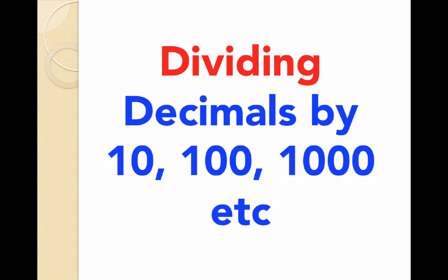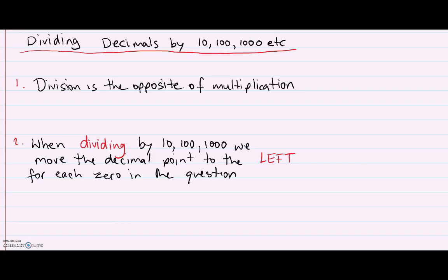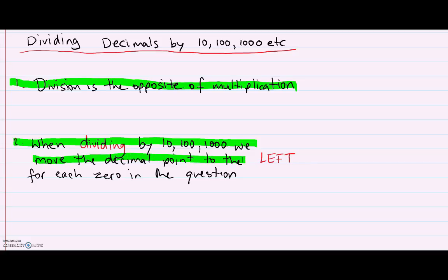Let's take a look at dividing. Just like the last video, I have two important things to note. The first is that division is the opposite of multiplication, so whatever rule we had for multiplication, we're going to have the opposite rule for division. The second thing to note is that when we divide by tens, hundreds, and thousands, we move the decimal point to the left for each zero in the question.